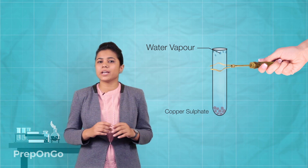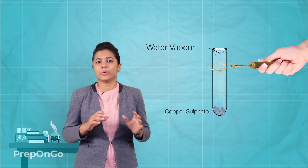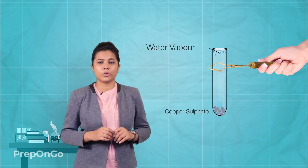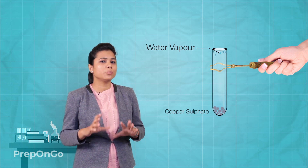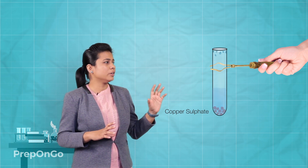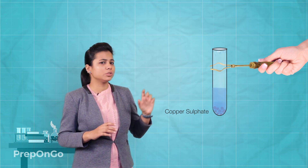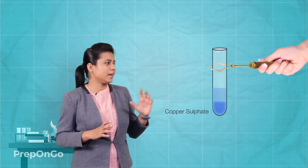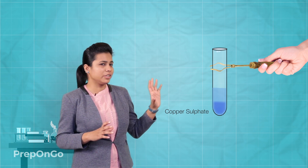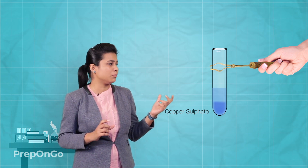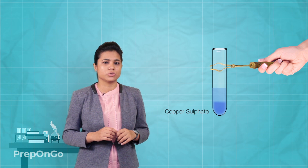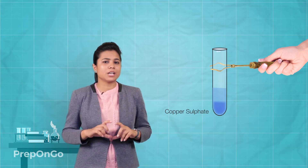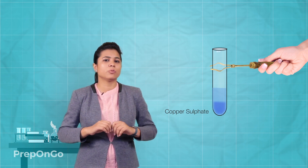Now we have to verify our conclusion — whether water molecules are present in the salt or not. So we are going to add water again to these dried crystals. You can see that the color has been regained; it has again become a blue color solution. So we can say that the copper sulphate had some water molecules.